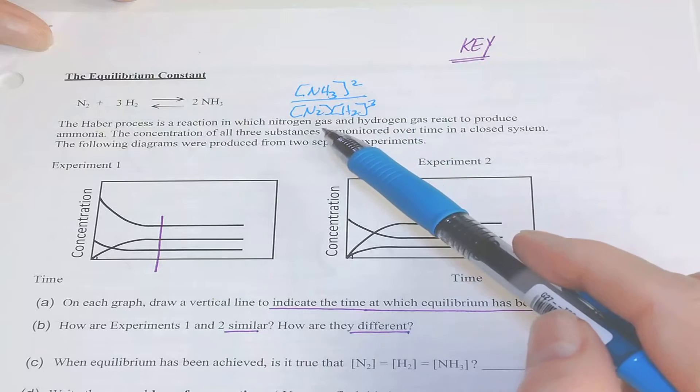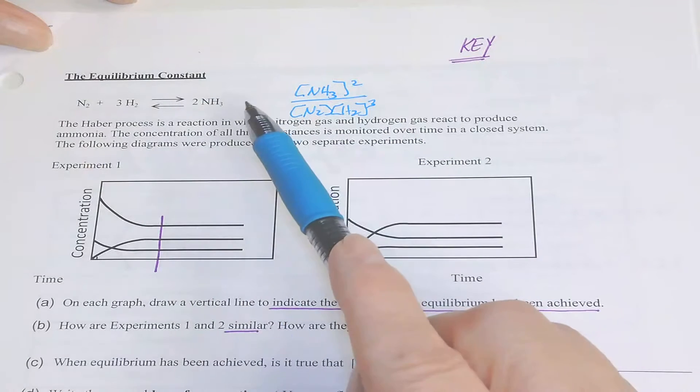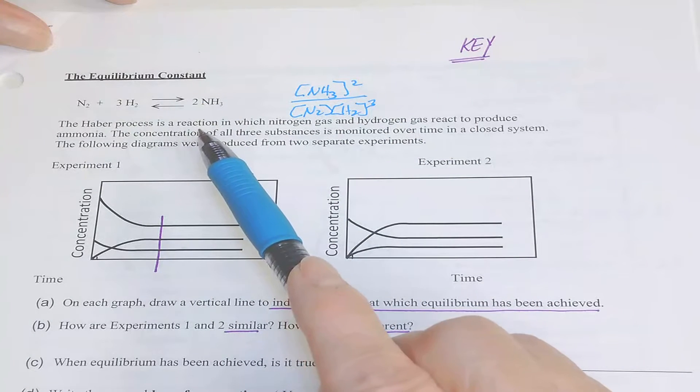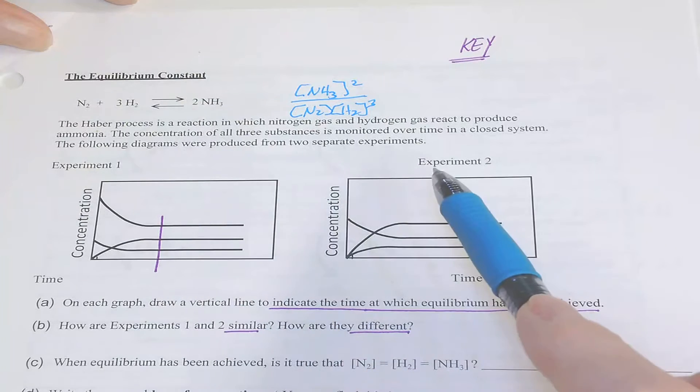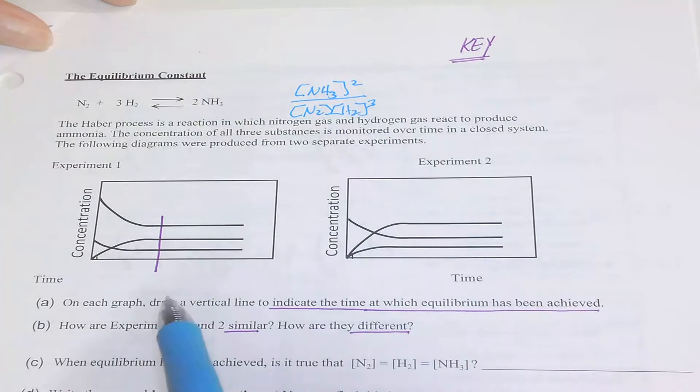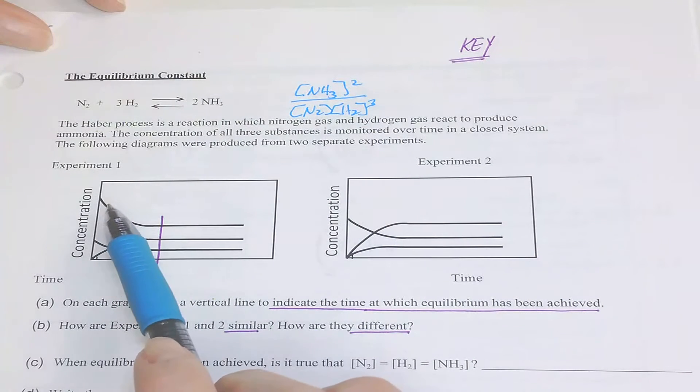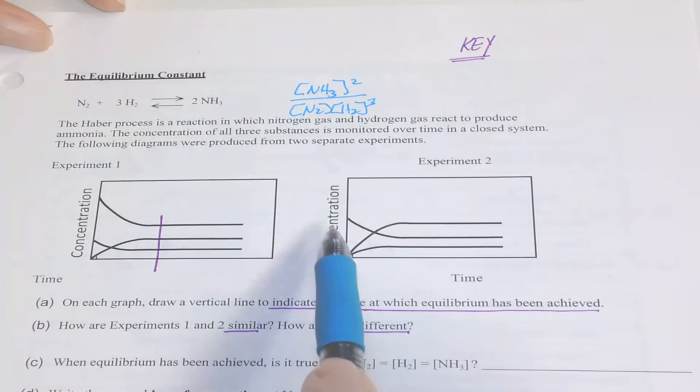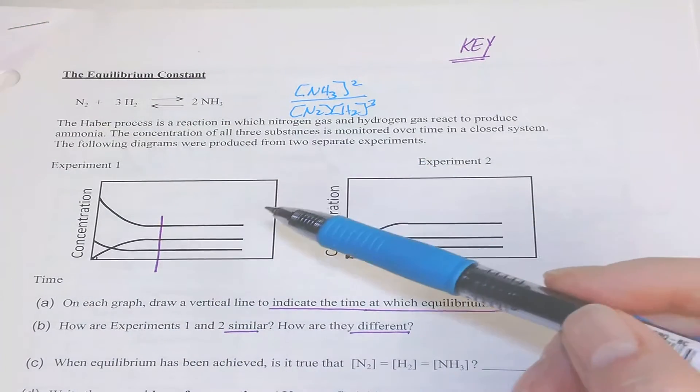Looking at this reaction called the Haber process, looking at the graphs and running two different experiments, you can see that it didn't really matter where we started with how much concentration of reactant or product.